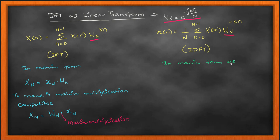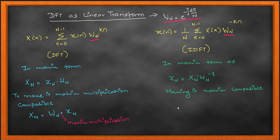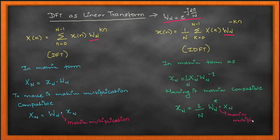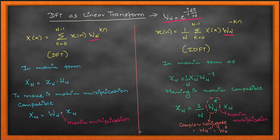For the IDFT shown on the right-hand side, in matrix form we write x(n) = X_N · W_N inverse. Finding the inverse of a matrix is not straightforward; however, in DFT we can write the inverse as a complex conjugate because the matrix W is an orthogonal unitary matrix. So W_N inverse equals W_N conjugate, and that is how the computation gets simpler.